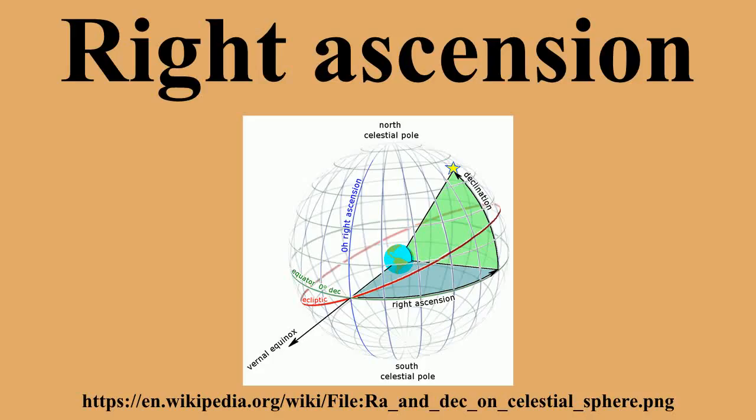Sidereal hour angle, used in celestial navigation, is similar to right ascension, but increases westward rather than eastward. Usually measured in degrees, it is the complement of right ascension with respect to 24 hours. It is important not to confuse sidereal hour angle with the astronomical concept of hour angle, which measures angular distance of an object westward from the local meridian.